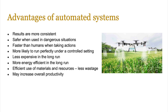Automated systems are safer when used in dangerous situations. They're faster than humans when taking actions — they just follow their programming. They're more likely to run perfectly under controlled settings, though of course there are disadvantages related to that which we'll talk about in a moment.